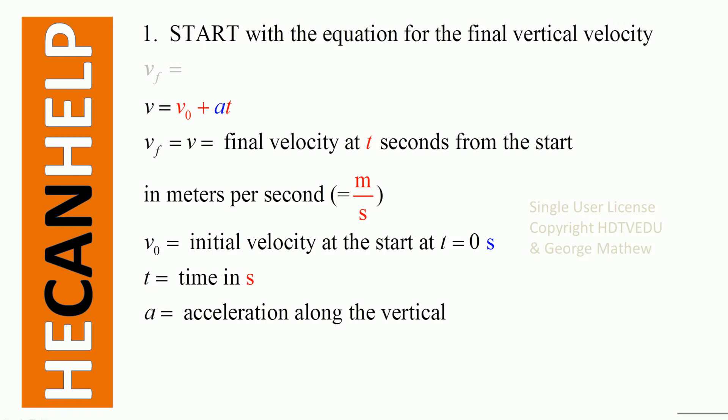Start with the expression for the final vertical velocity. What is the expression for the final vertical velocity? Final vertical velocity is v-final. Most textbooks use just v. So v equals v0 plus at.